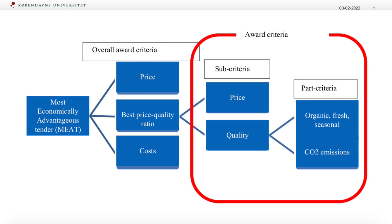We won't be spending time on lifecycle costing here as there is a separate video on that topic. Beyond overall award criteria under MEAT, we can also use sub-criteria or even part-criteria. This can include a wide range of factors going beyond cost, including social and environmental aspects.